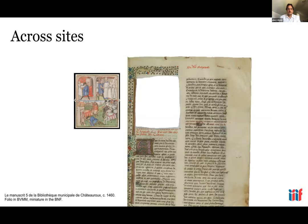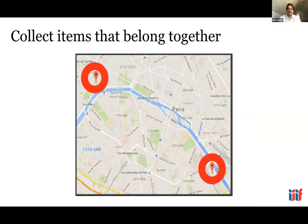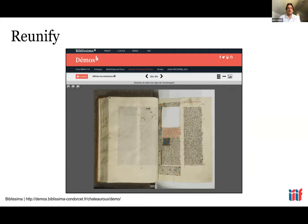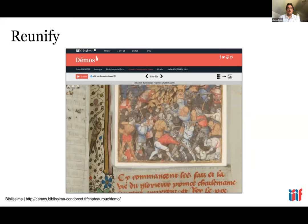In another example, the manuscript itself is in the BNF in Paris, but the illustrations were cut out and are owned by a separate institution on the other side of Paris. Both institutions made their images available over IIIF, making it possible to overlay the illustrations onto the manuscript. The thumbnails of the illustrations are overlaid onto the manuscript, and you can zoom into both images.